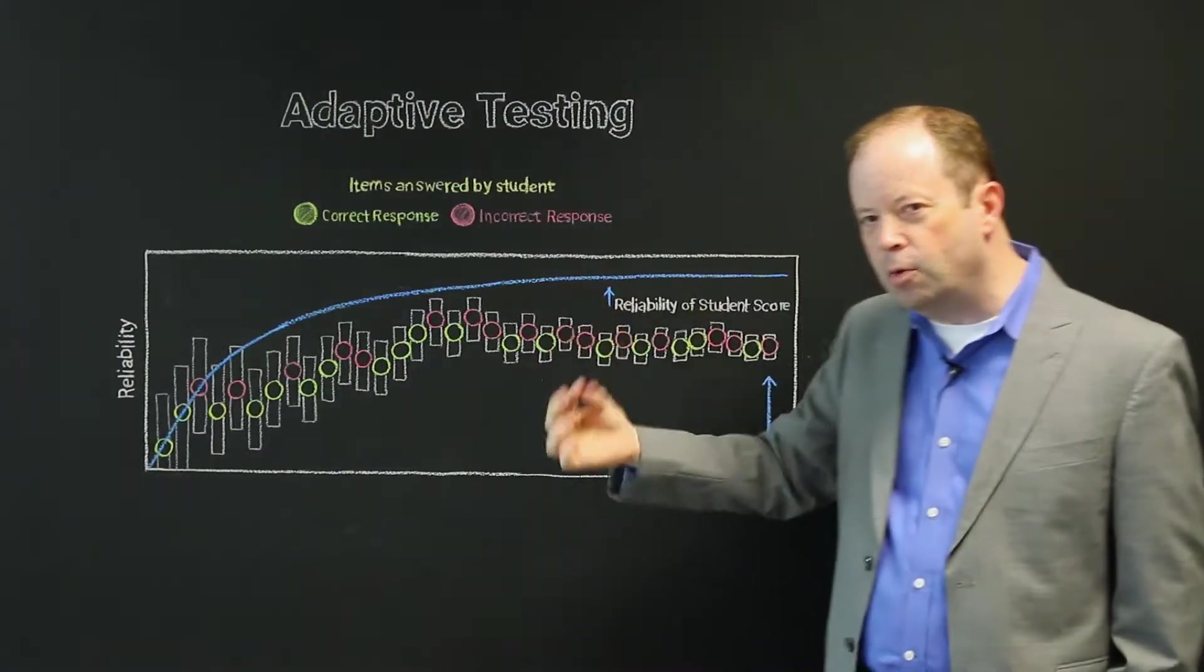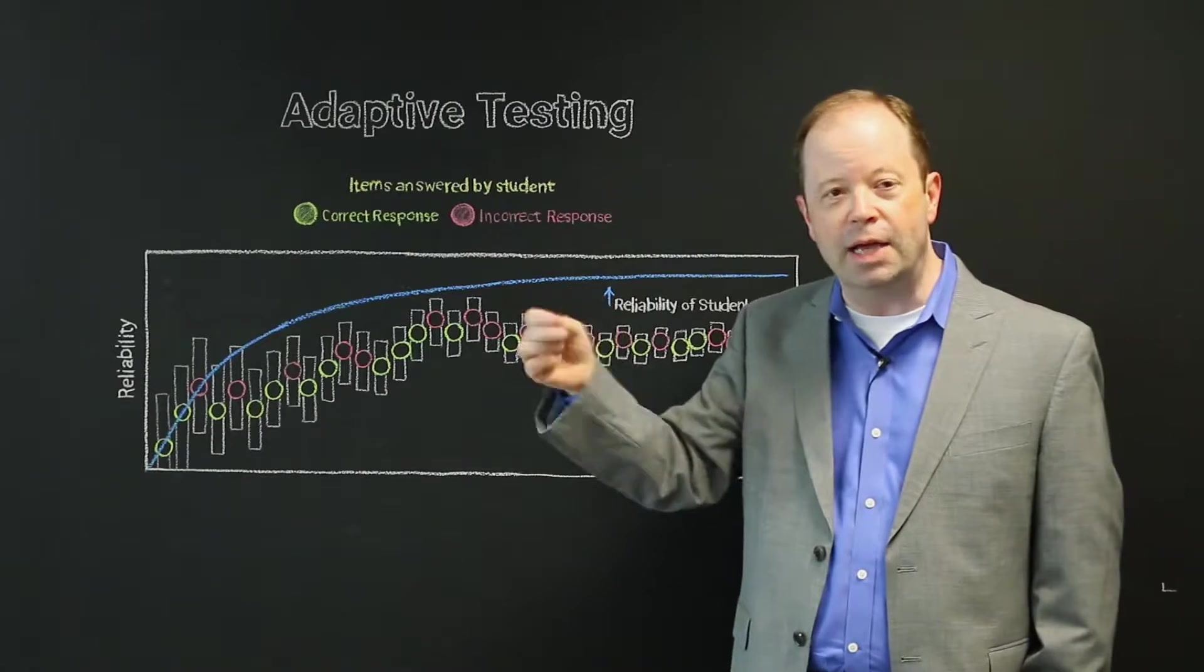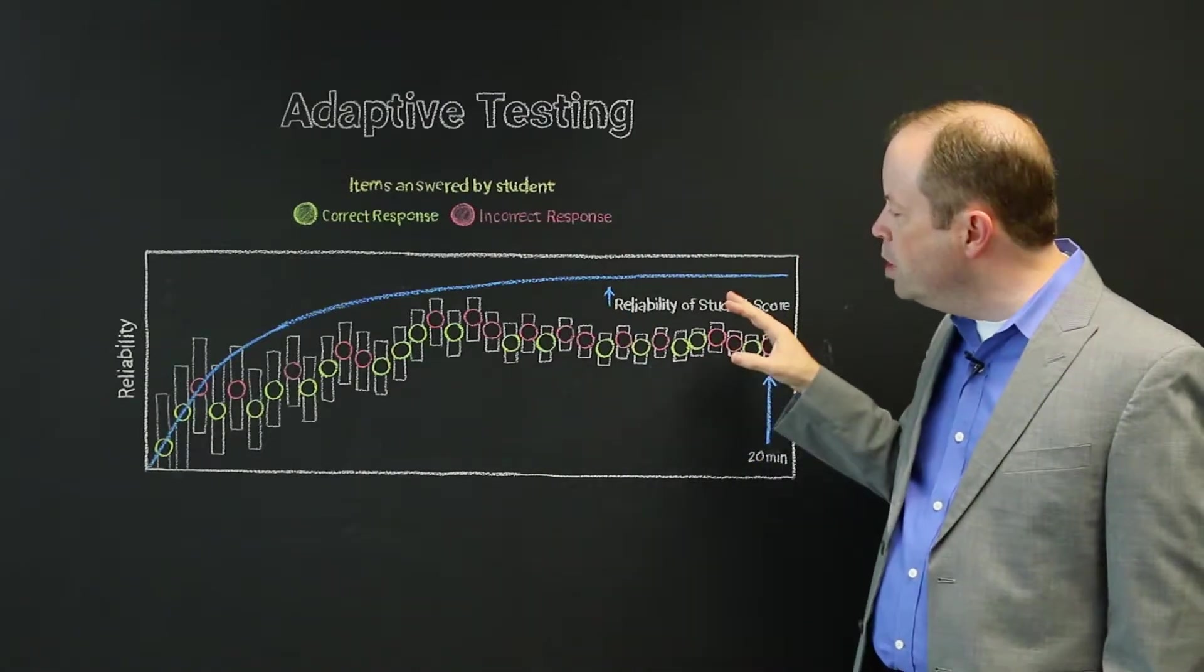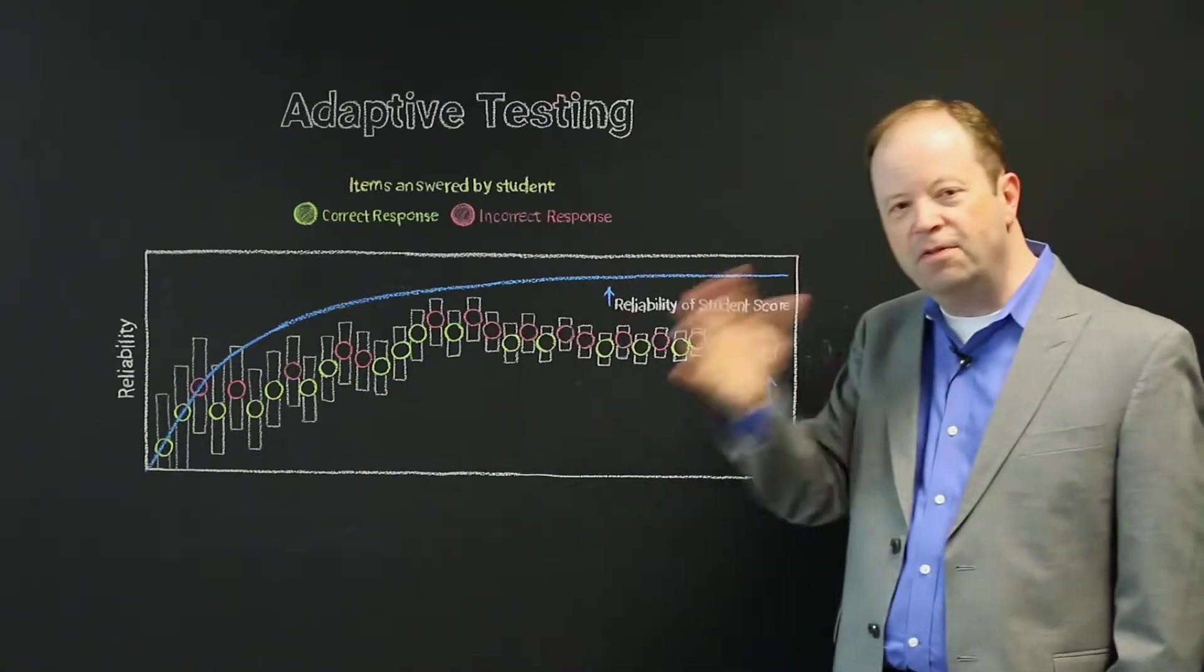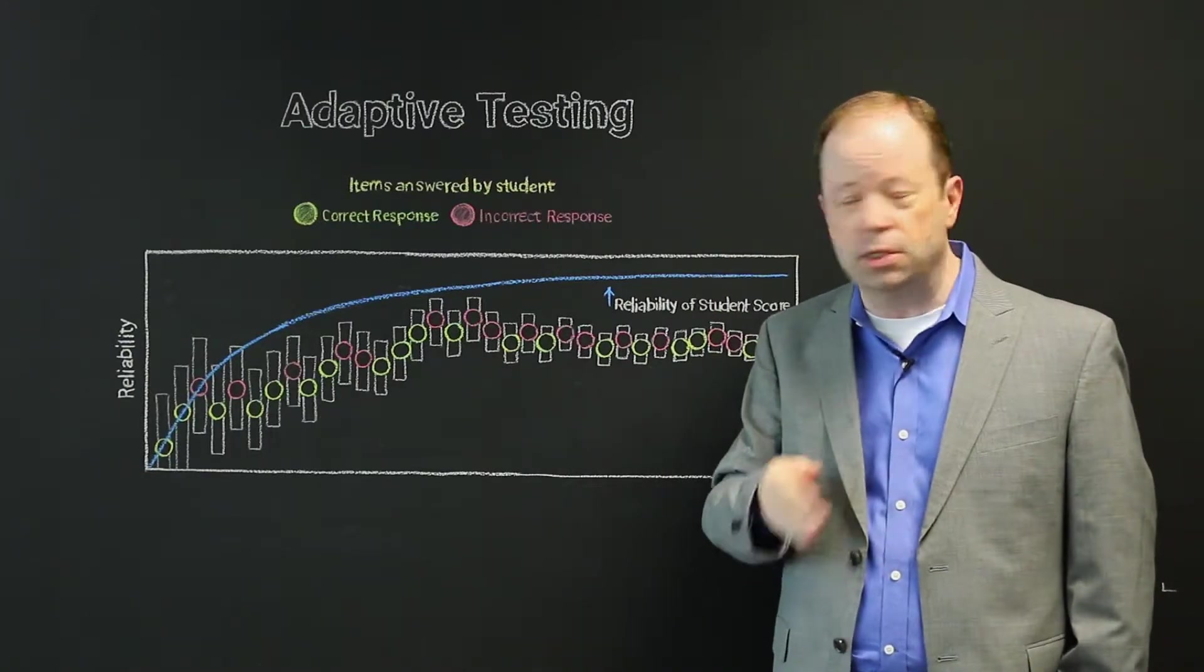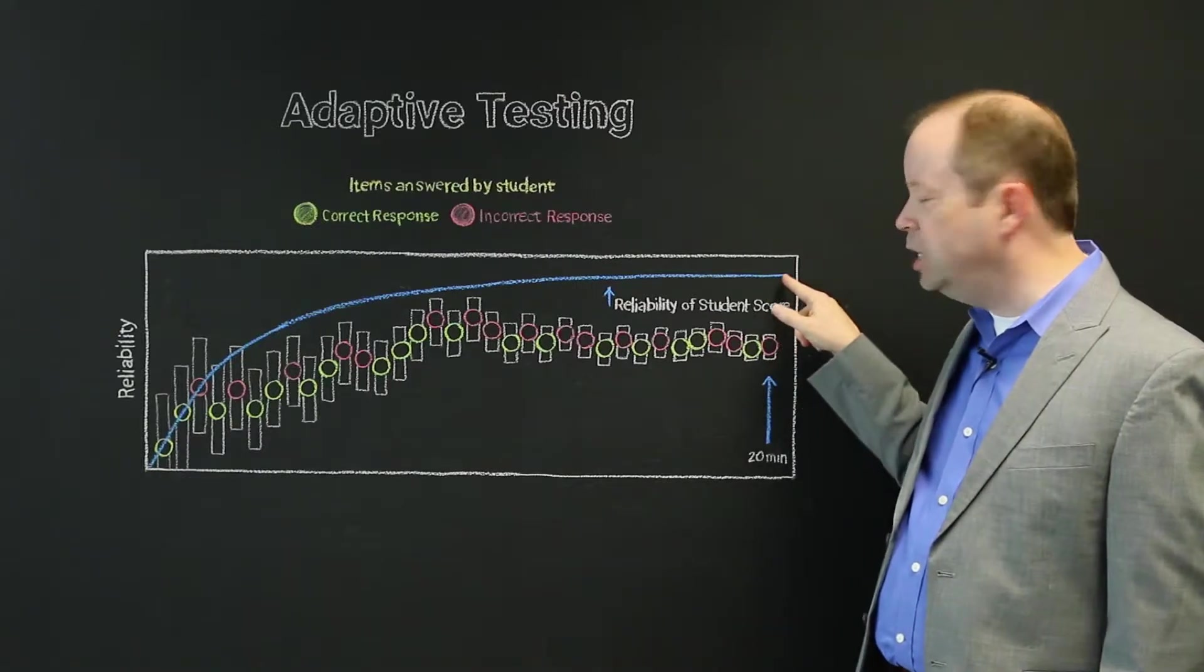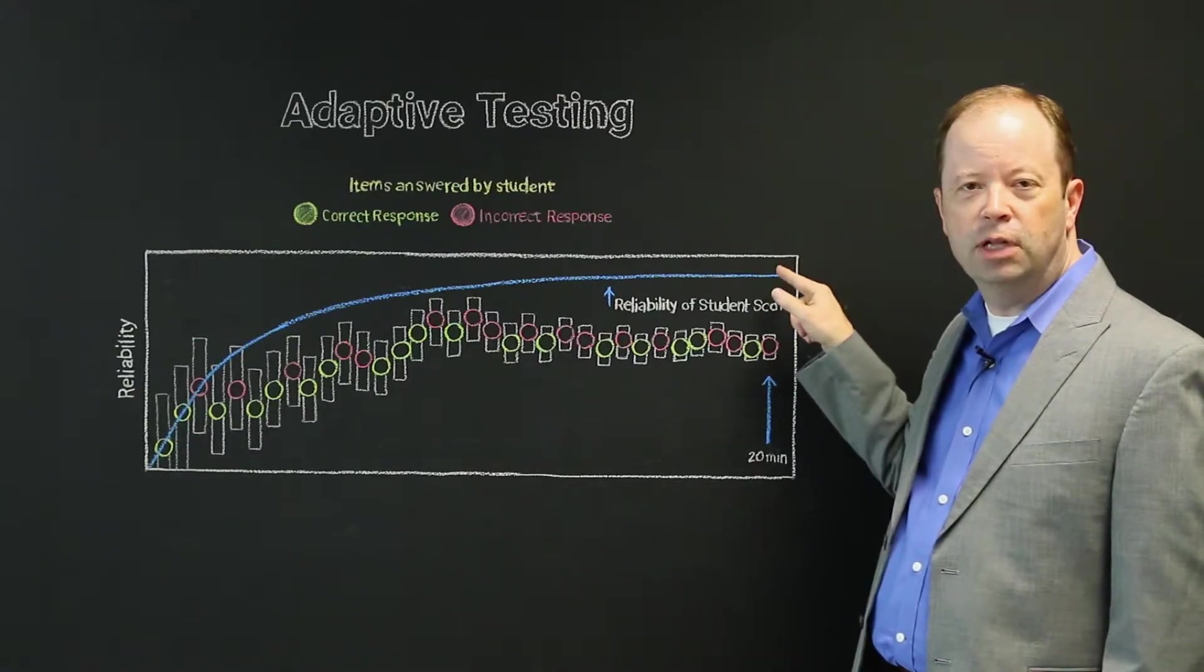To be clear, it's never a plateau. It's always going up. It's just that it doesn't go up quite as much. So what you see in this depiction is the very reason that we cut Star off at 34 questions, because by the time you've answered 34 questions, you have achieved a very, very high degree of reliability.